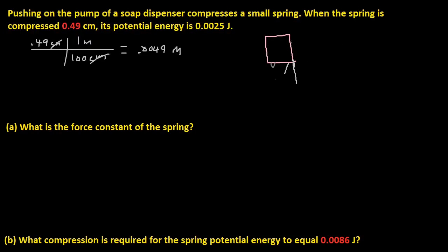Now we can calculate for the force constant, because we know that the work done by a spring is one half k x squared. This is the potential energy, actually, potential energy of a spring.